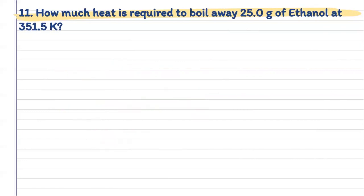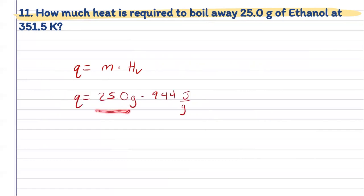For number 11, we want to know the heat required to boil, so now we're not going to be using heat of fusion — we're going to be using our heat of vaporization on 25.0 grams of ethanol at 351.5 Kelvin. Since we're boiling, we use heat of vaporization. Heat is equal to mass times heat of vaporization for ethanol. We know our mass, and my table lets me know the heat of vaporization of ethanol is 944 joules per gram. Plugging those into my calculator, I get 23,600 joules.